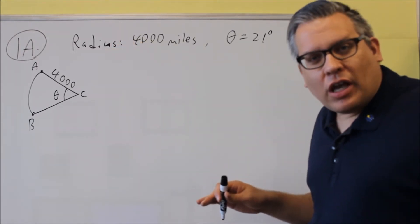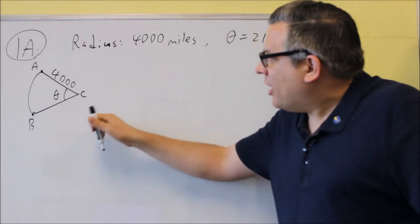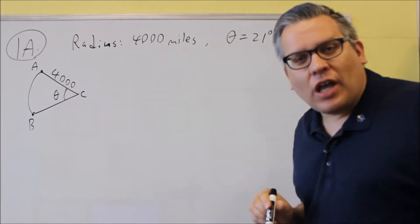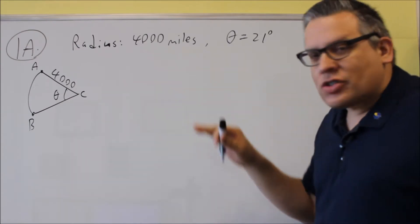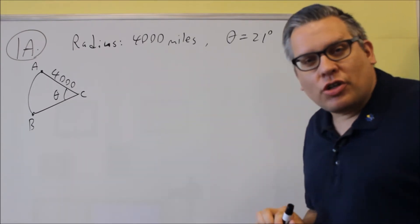1A, we're given a shape that looks like a globe, and we want to find the distance between A and B. Given the radius is 4,000, and the theta in between is 21.